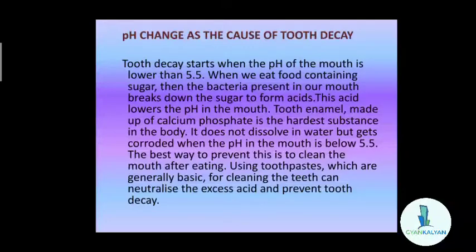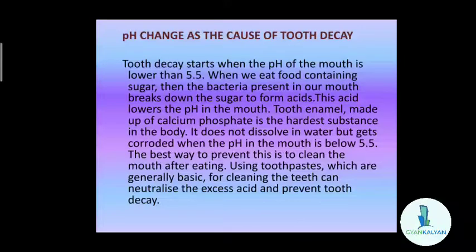Tooth enamel, made up of calcium phosphate, is the hardest substance in the body. Though it is the hardest material, it gets corroded when the pH in the mouth is lower than 5.5. It does not dissolve in water but gets corroded when the pH drops below 5.5. The best way to prevent tooth decay is to clean the mouth after eating, by rinsing with lots of clean water.